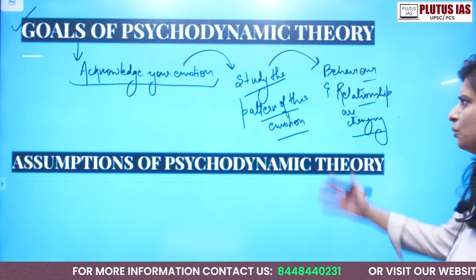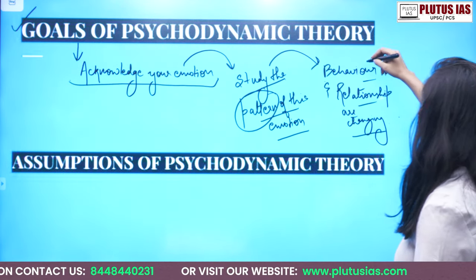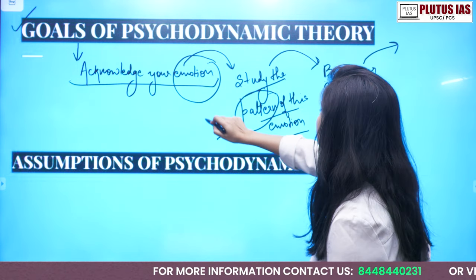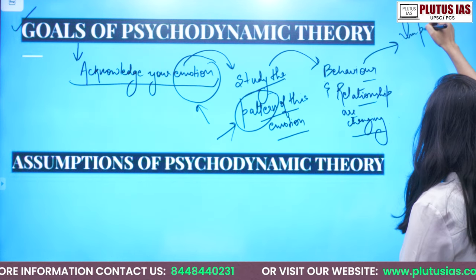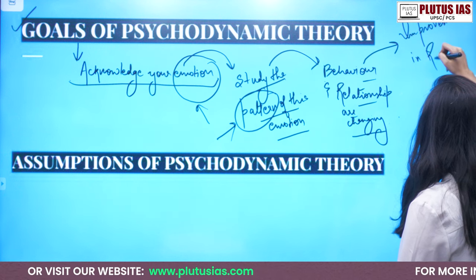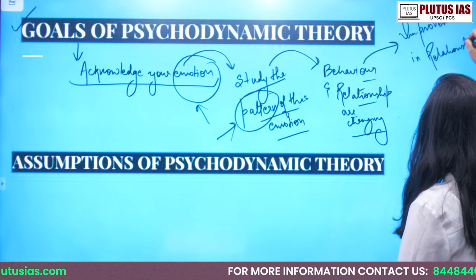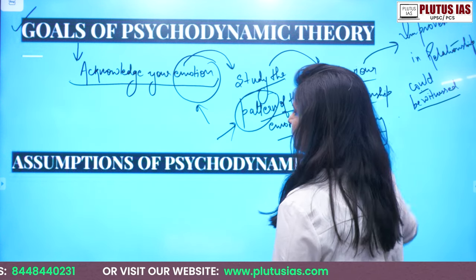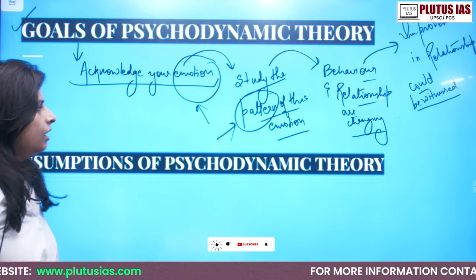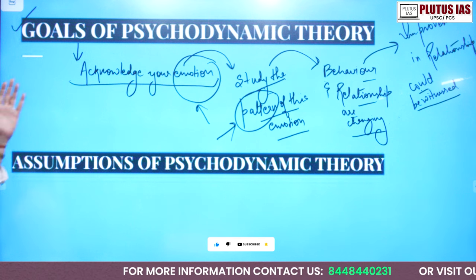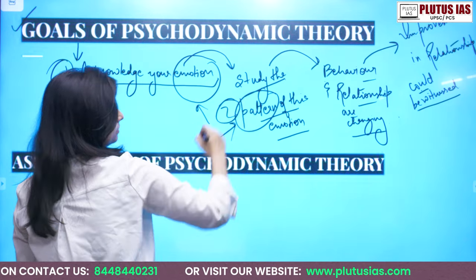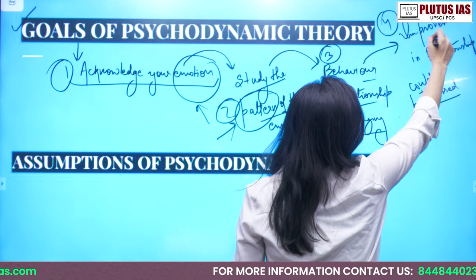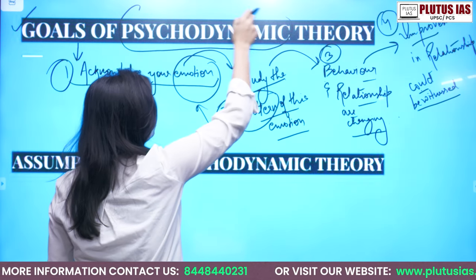Once you know why your relationships are changing and why this pattern is occurring, from here onwards, if you start working on this emotion and on this pattern, what will happen ultimately is your improvement in relationships could be witnessed. You have acknowledged the emotion, studied the pattern, addressed the behavior or the changes in your relationship, and now your relationships have got improved. This is the goal of psychodynamic theory.